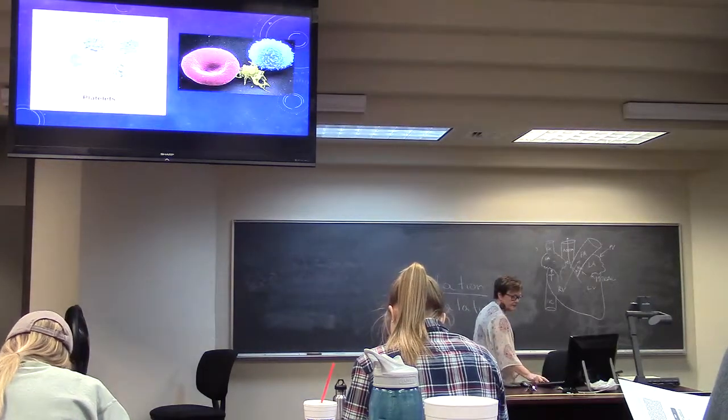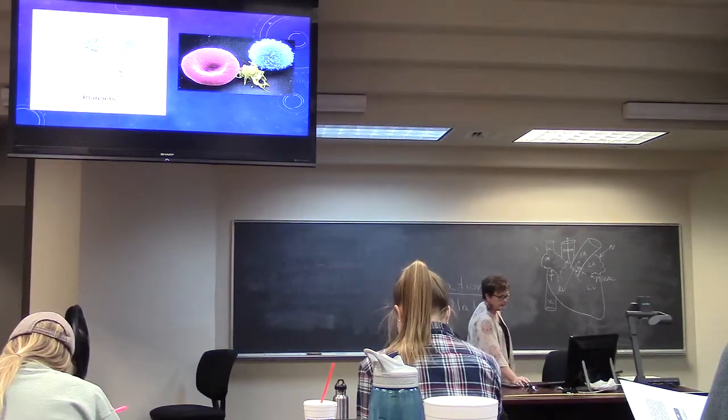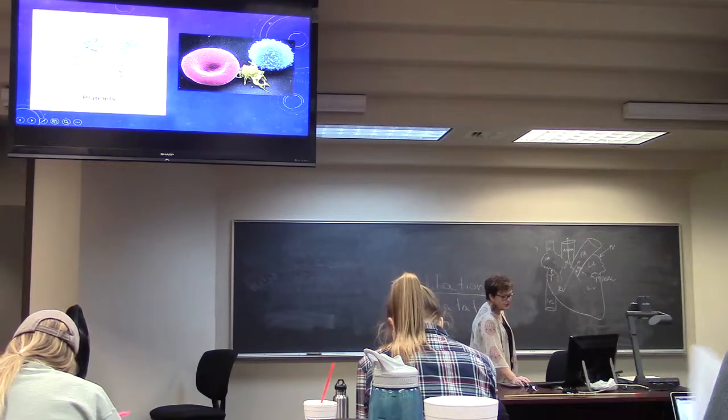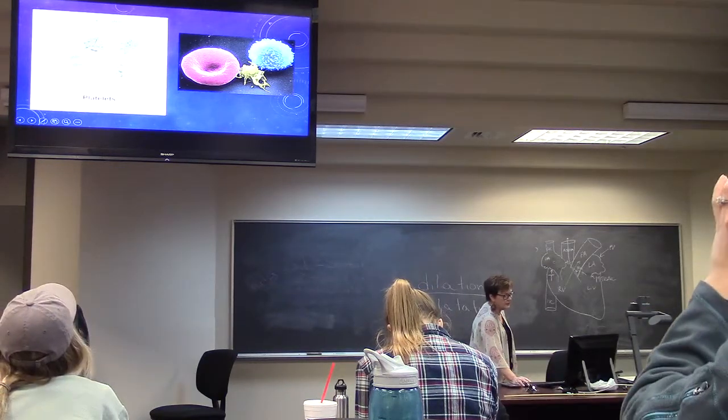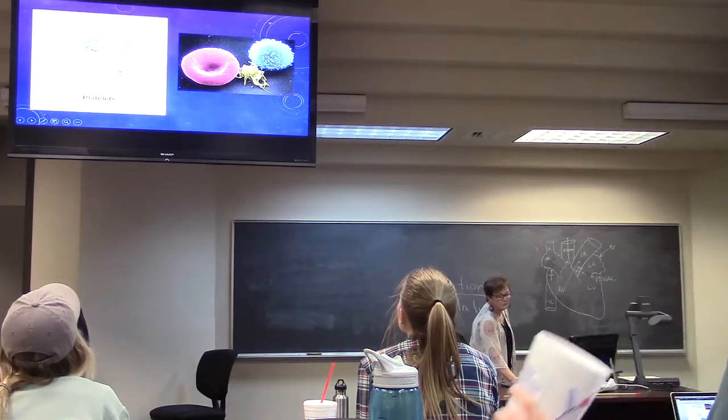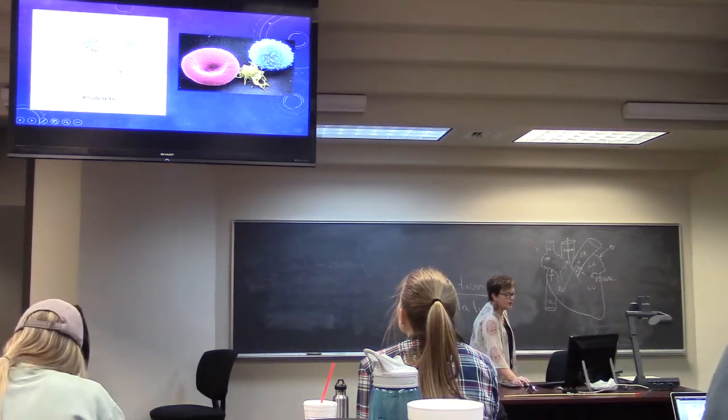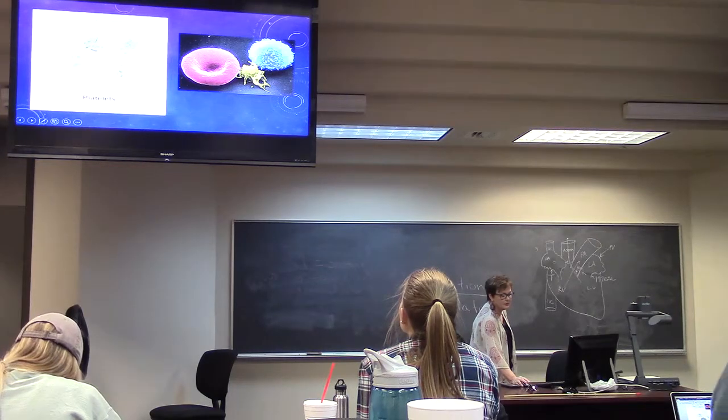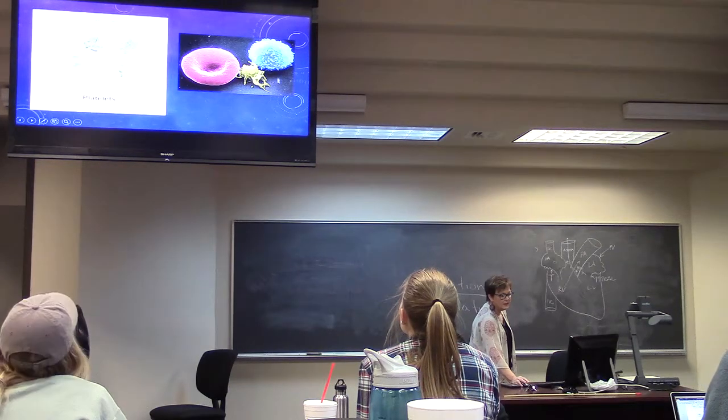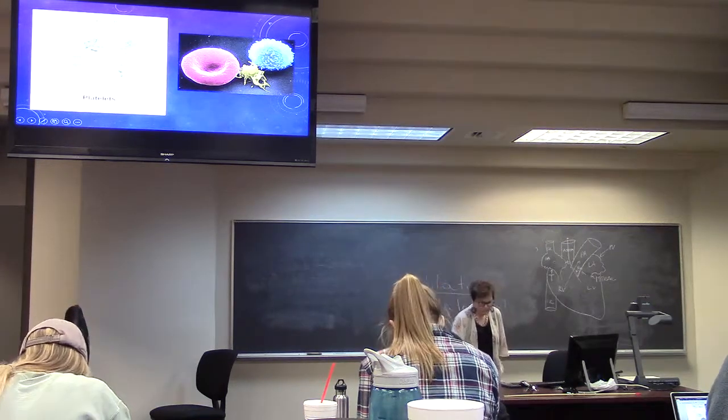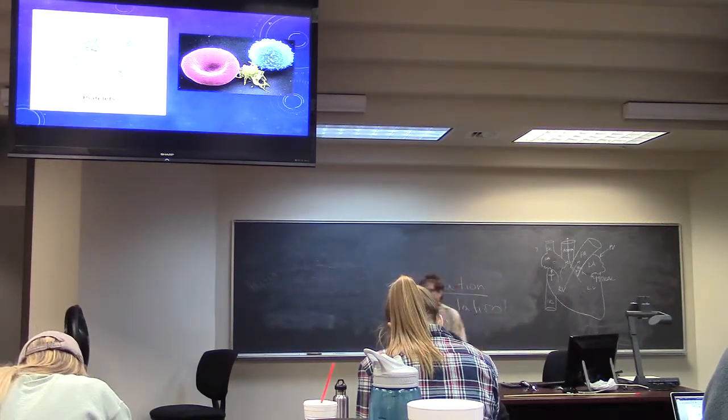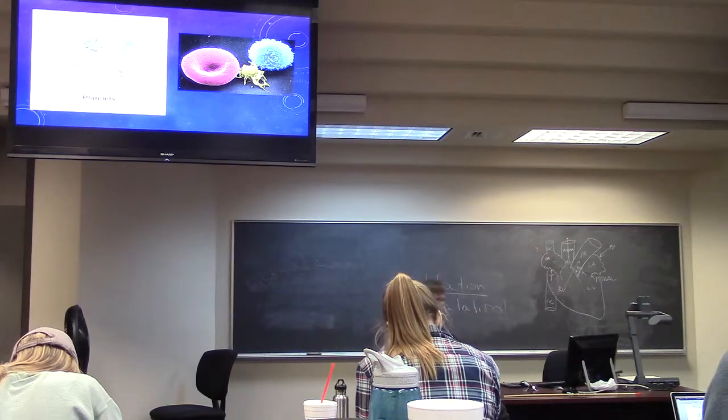Platelet aggregation. So usually platelets, when they are just circulating and hanging out and doing their thing, they are going to look like this. This is kind of flat, kind of flat, small-shaped. Here's in comparison to a red blood cell and a white blood cell. That's an activated platelet.